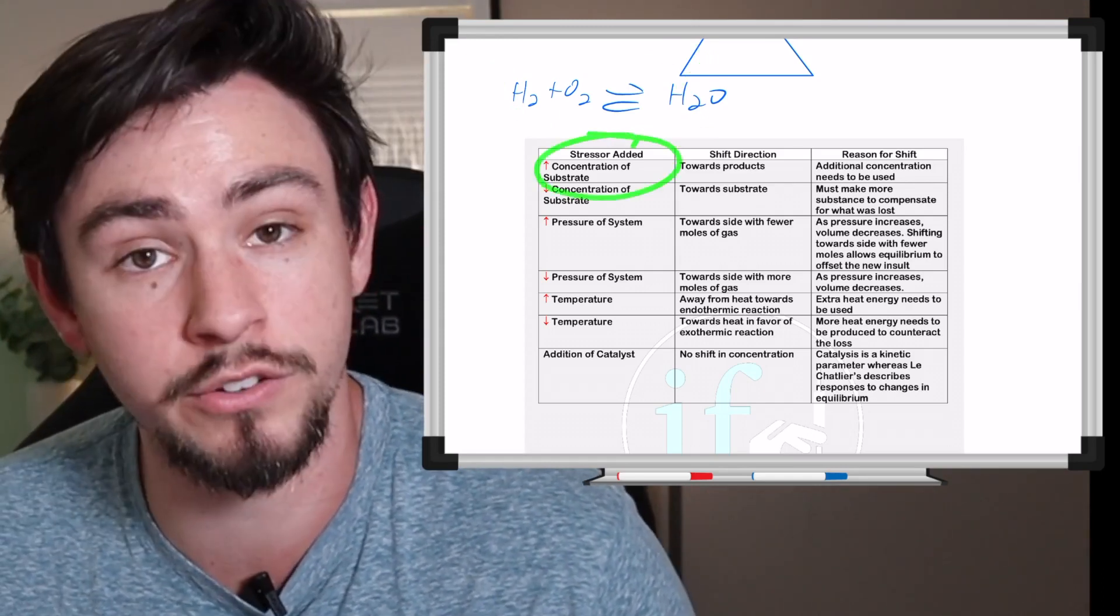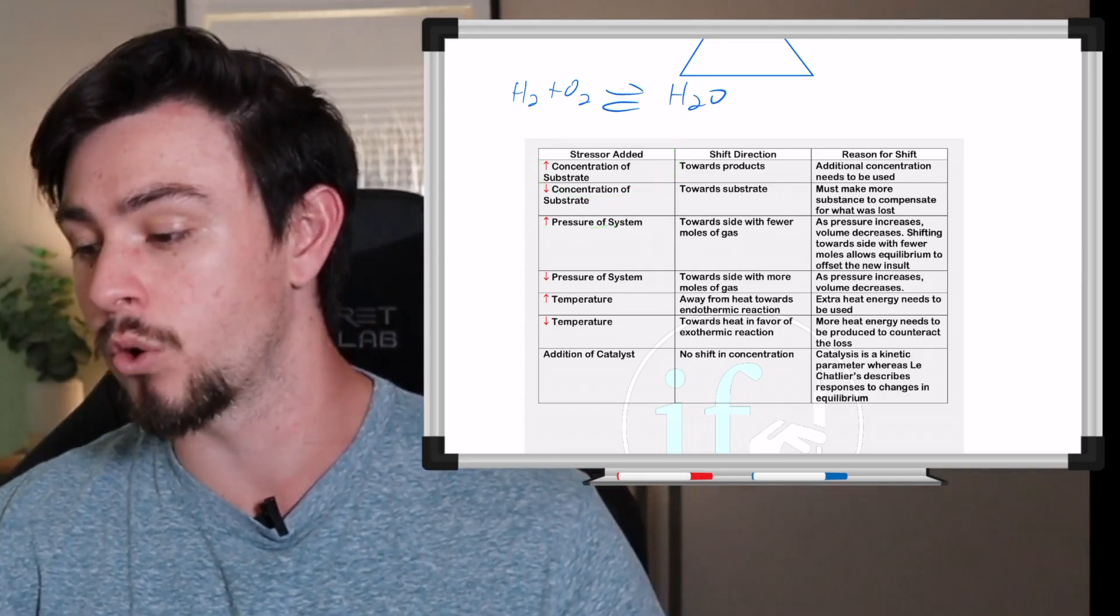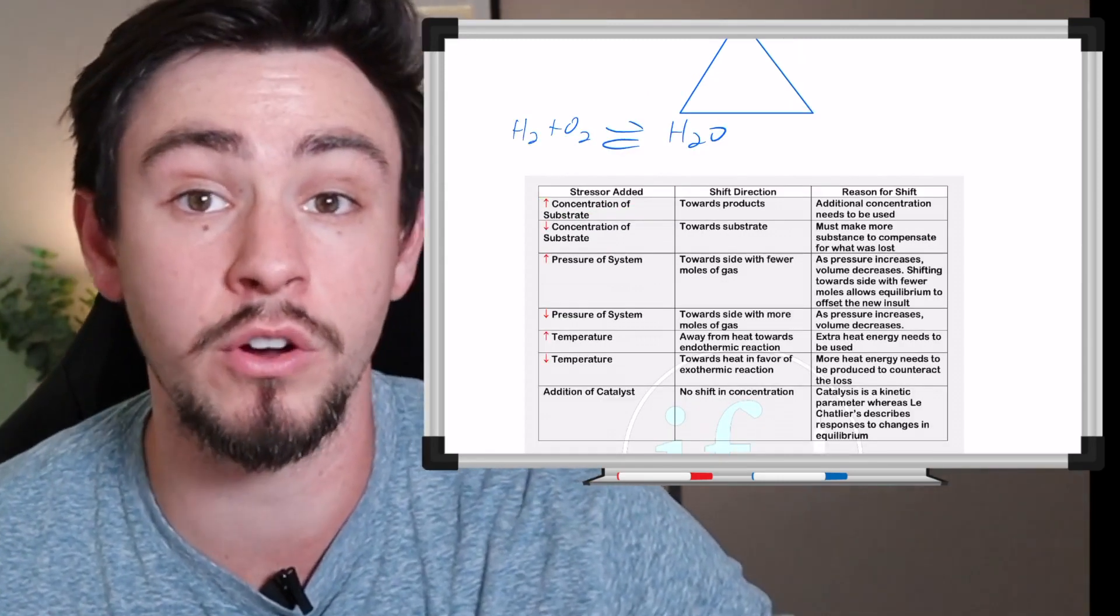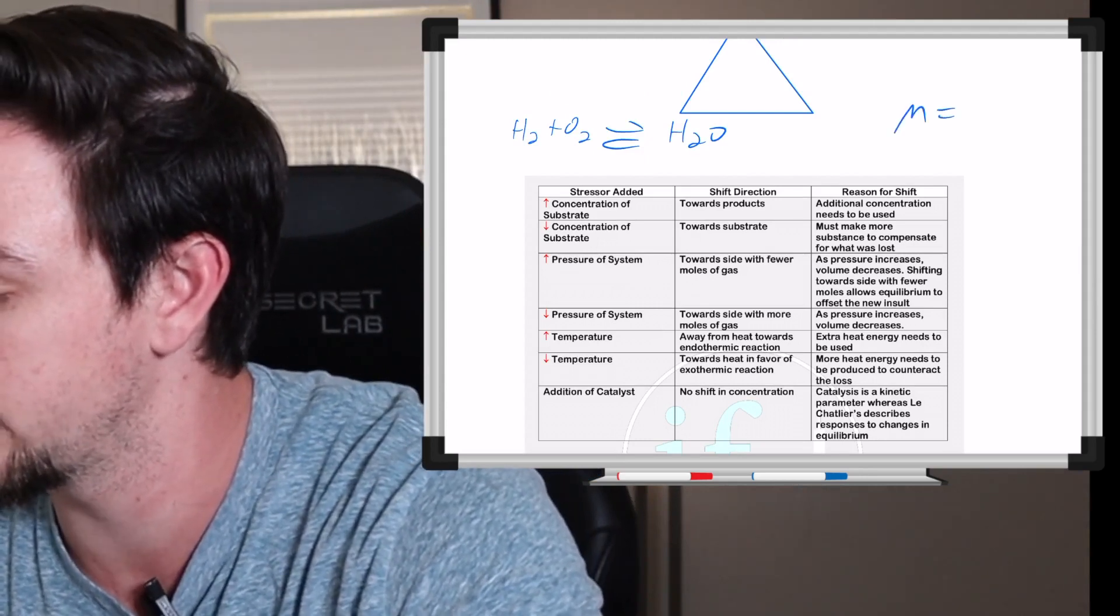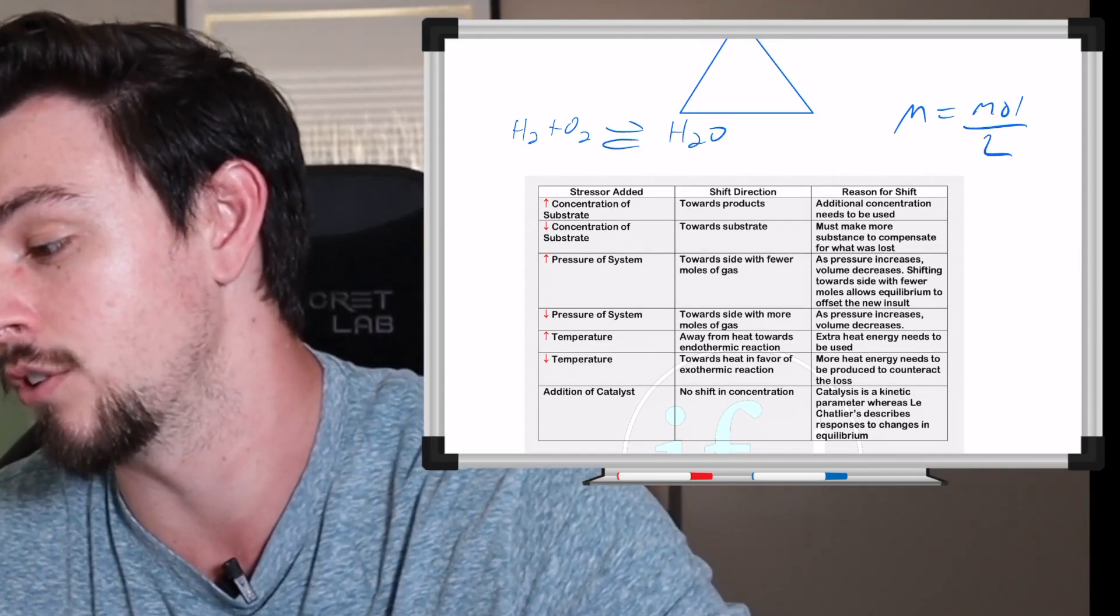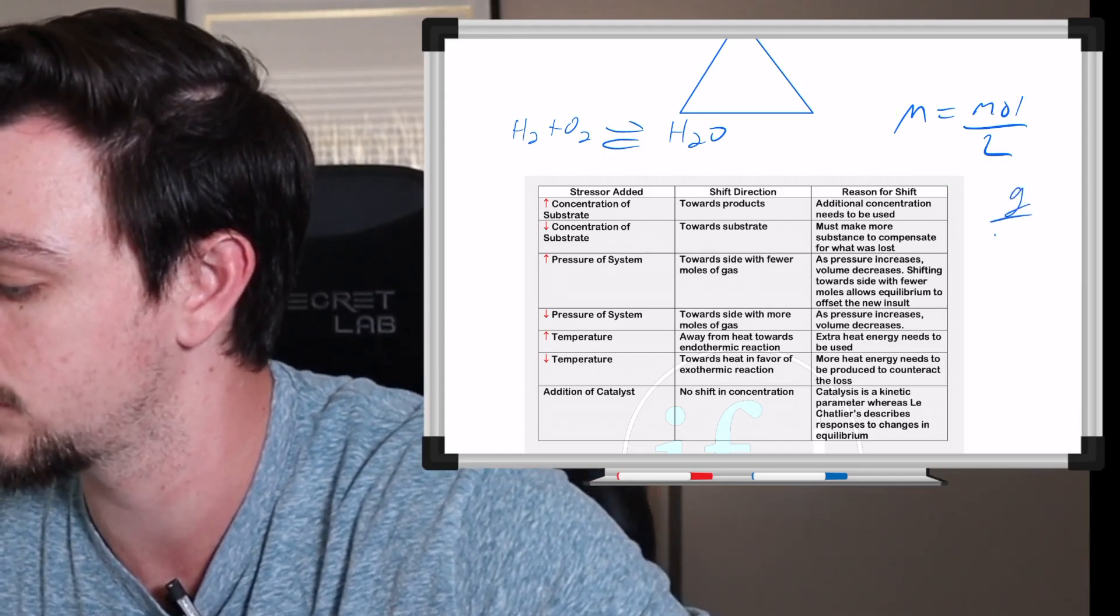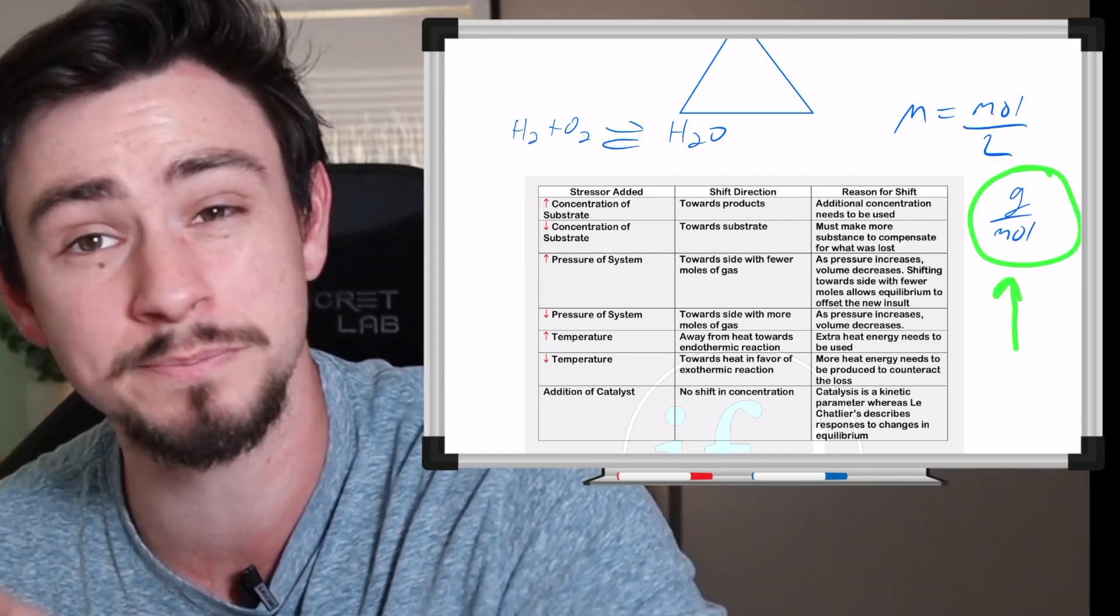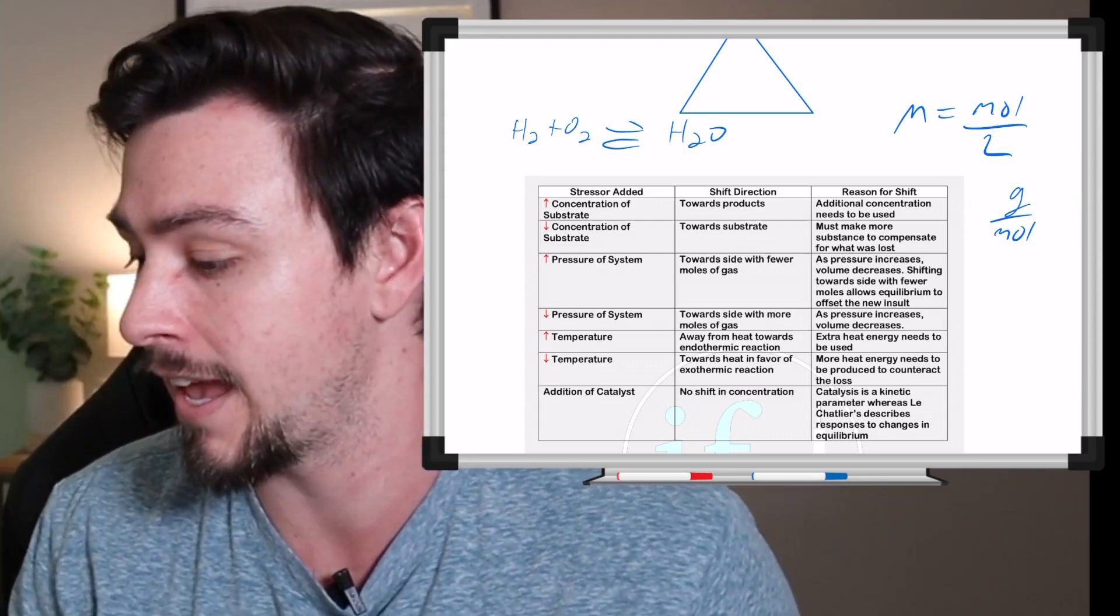The second disturbance or stressor that can be added is pressure. Now this one's a little bit more complicated because you're going to have to know which side has more moles. Now when we're talking about moles, we are talking about moles in the context of molarity is equal to moles per liter, and so it's very possible that you may have to do some calculation either using this formula or perhaps even using like molar mass grams per mole, which will actually be provided to you via the periodic table.